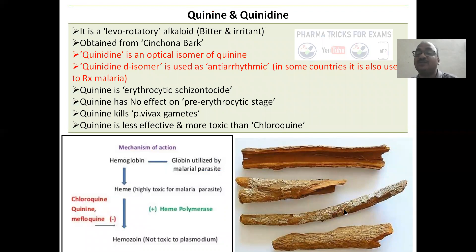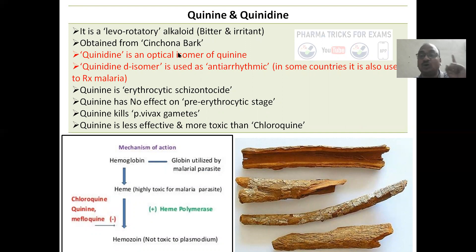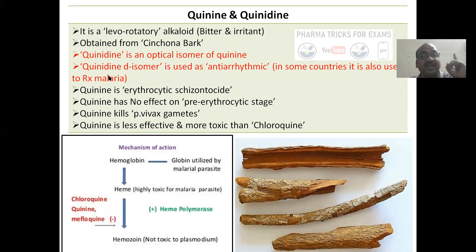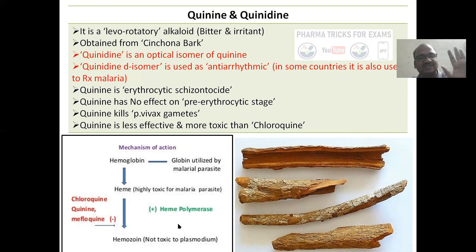Quinine and quinidine are obtained from cinchona alkaloids. Quinine is a levorotatory alkaloid — it is bitter and an irritant, obtained from cinchona bark. Quinidine is an optical isomer of quinine — very very important. Quinidine is the dextro-isomer and is used as an anti-arrhythmic drug. In some countries, quinidine is also used for treatment of malaria. Same mechanism of action as chloroquine.